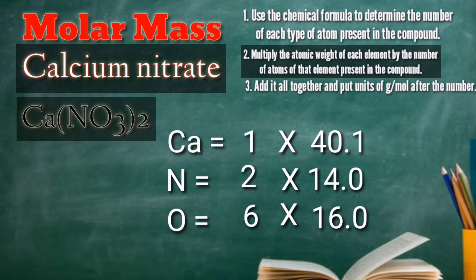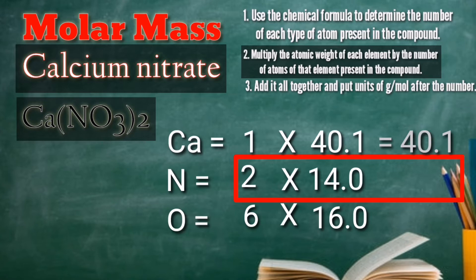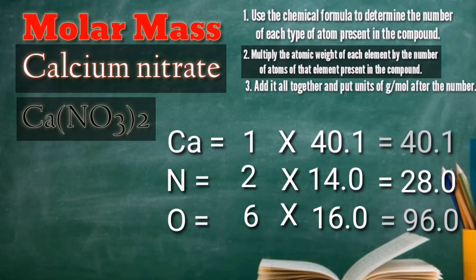Now, let's multiply the atomic weight of each element by the number of atoms. We have 1 times 40.1 equal to 40.1; 2 times 14.0 equal to 28.0; and 6 times 16.0 equal to 96.0.